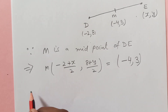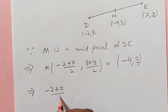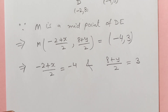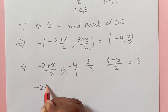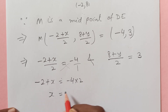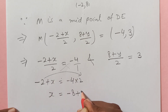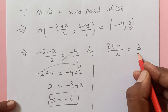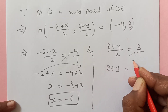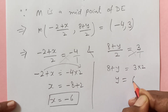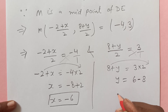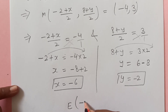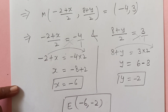Now equate the x-coordinates: negative 2 plus X over 2 equals negative 4, and 8 plus Y over 2 equals 3. Cross-multiplying: negative 2 plus X equals negative 8, so X equals negative 8 plus 2, which is negative 6. For the other equation: 8 plus Y equals 6, so Y equals 6 minus 8, which is negative 2. So the coordinates of E are (-6, -2). This is our final answer.